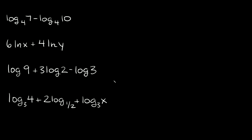Now let's condense a few logarithms. Starting at the top: log base 4 of 7 minus log base 4 of 10. We have the same log bases and we're subtracting, so that means we can turn our numbers into a fraction. This is equal to log base 4 of 7 over 10. That's our answer.